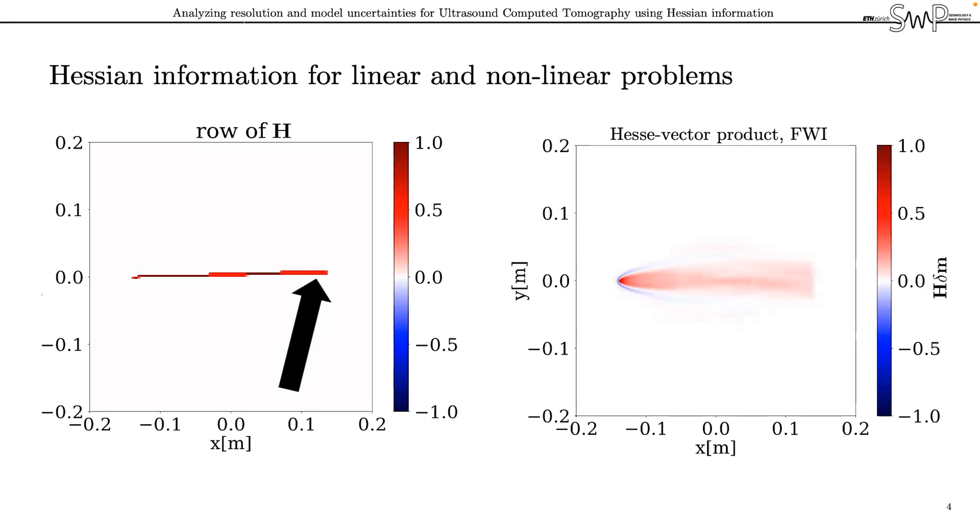On the right side, you can see now the result of the Hessian vector product for a point localized perturbation in the middle of the domain. In contrast to the straight ray example, the sensitivities extend away from the ray paths when finite frequency effects are accounted for by the modeling theory.